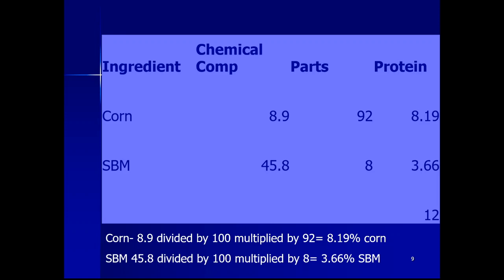This technique is particularly useful when preparing a concentrated mixture. A formulator can prepare the concentrated mixture and recommend to the farmer to mix it with grain available at home. For example, with 8 parts soybean meal, the farmer is advised to add 92 parts corn to provide 12% protein. This approach is practical during drought seasons or in areas where farmers cannot afford high-priced commercial concentrate mixtures.